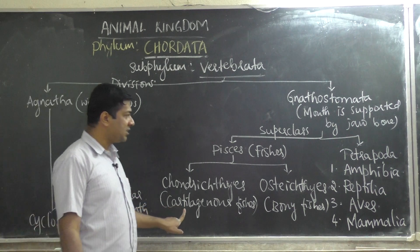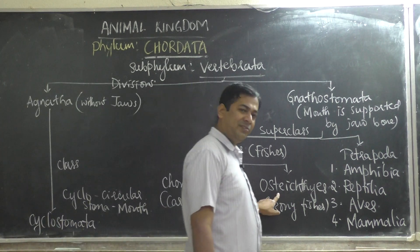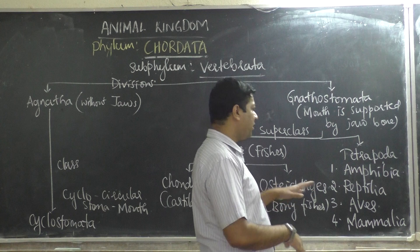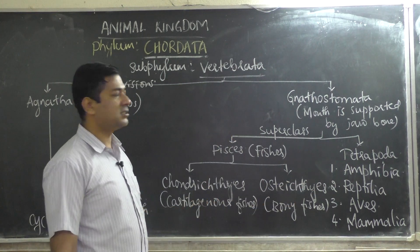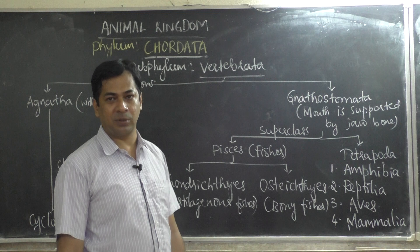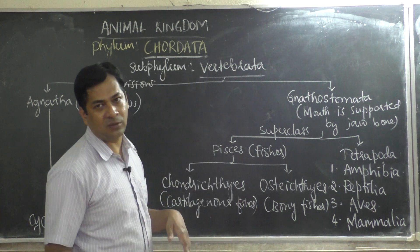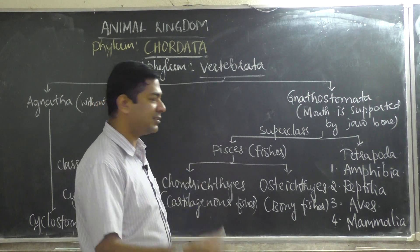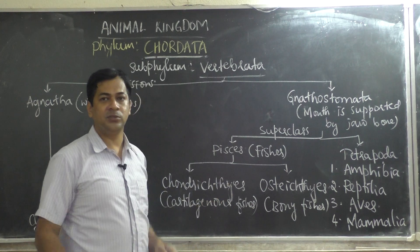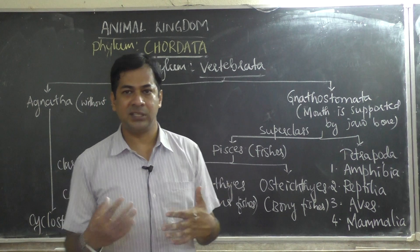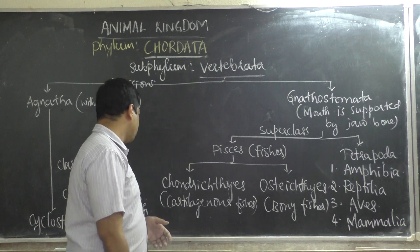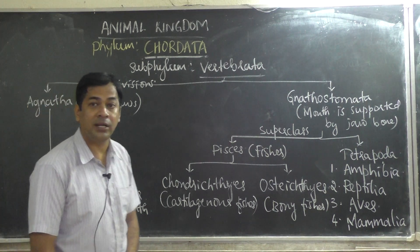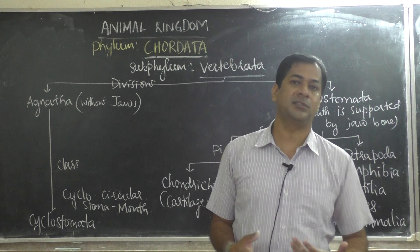Next, we will go to cartilaginous fishes, then bony fishes, then Amphibia, Reptilia, Aves, and Mammalia — and then the chapter is over. This is a big chapter; we have already taken about 16 to 17 classes and need five or six more. Keep watching the classes. Thank you.